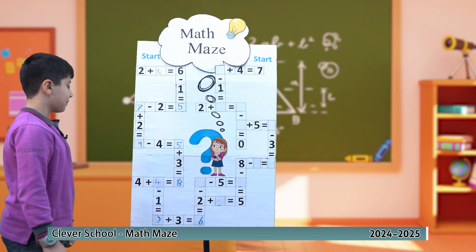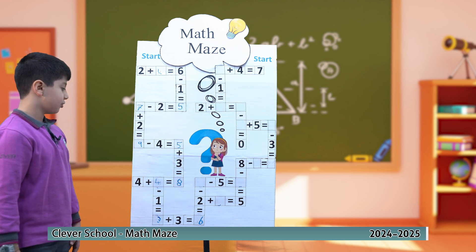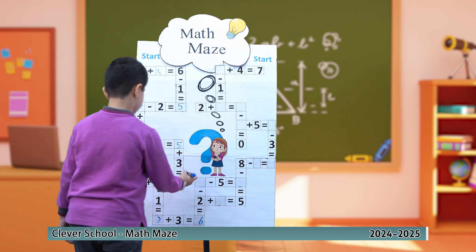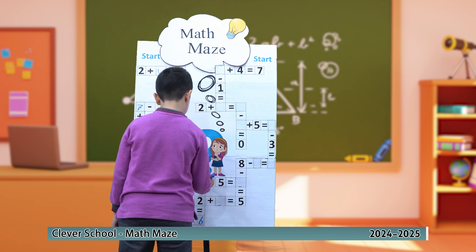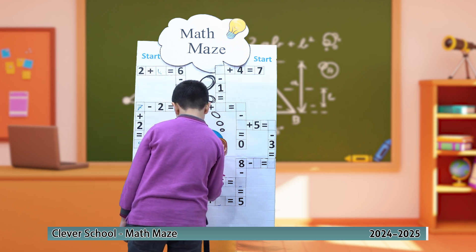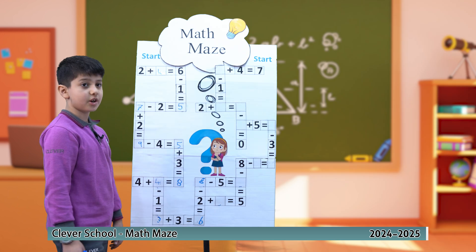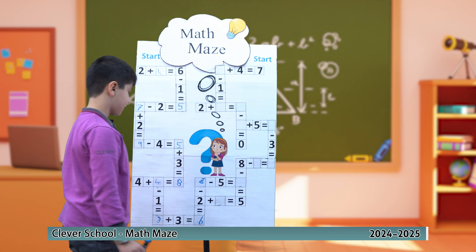Which number minus 2 equals 6? 8. 2 plus which number equals 5? 3.